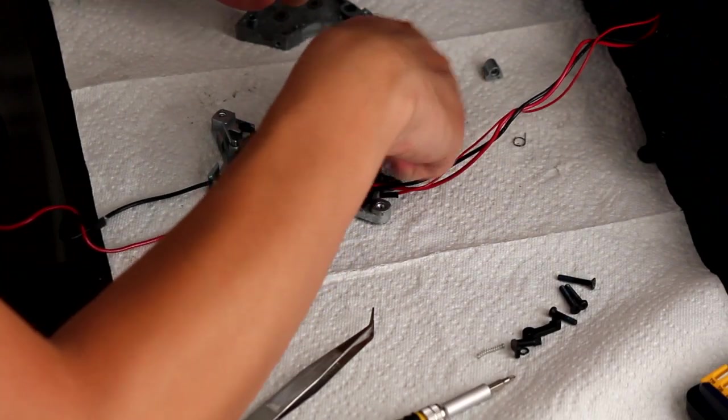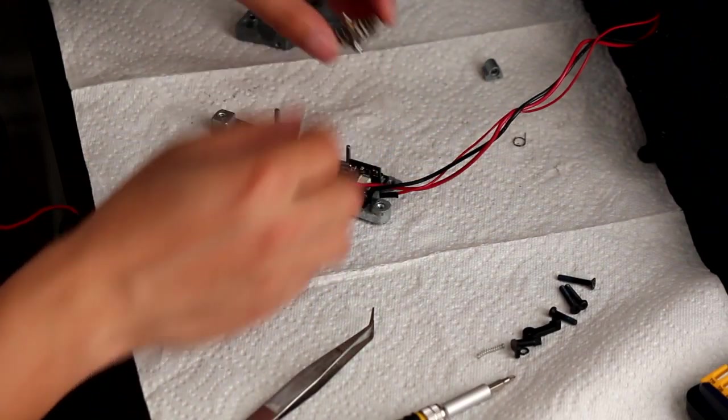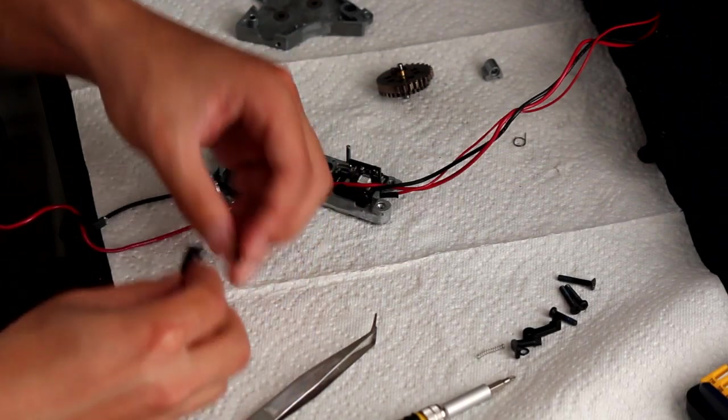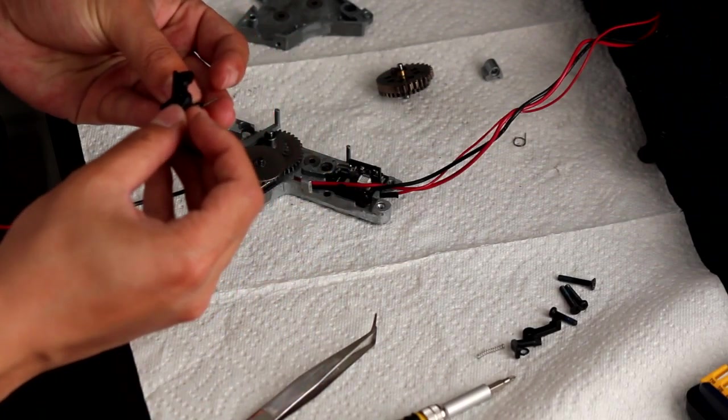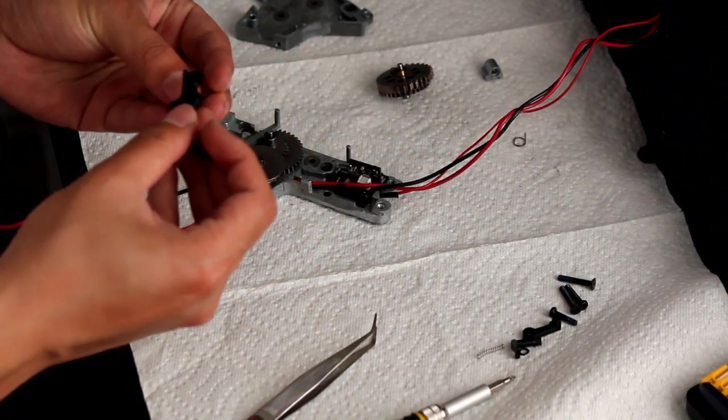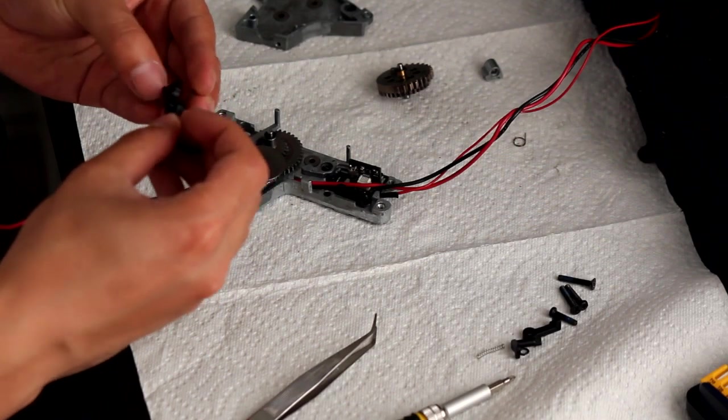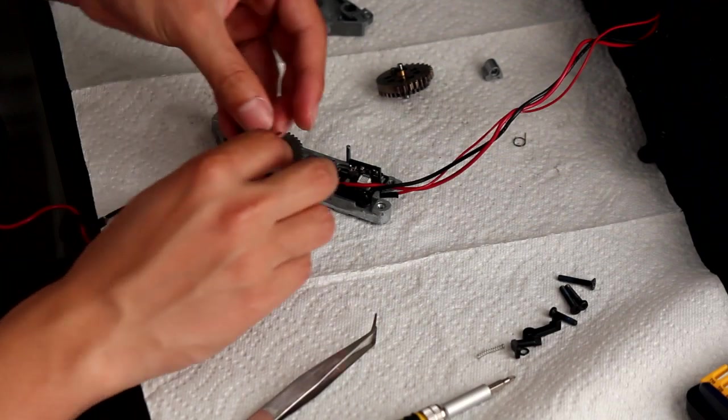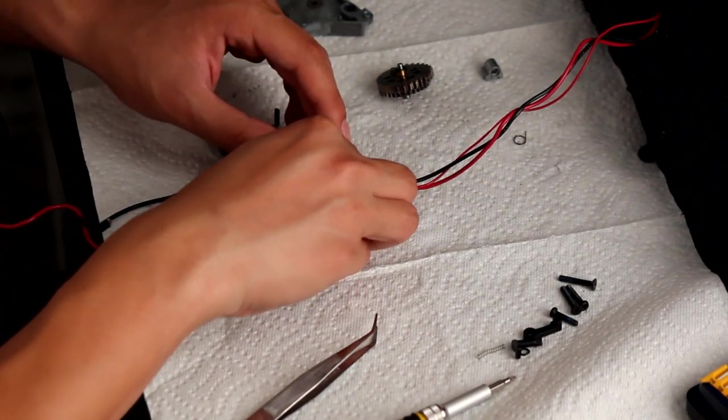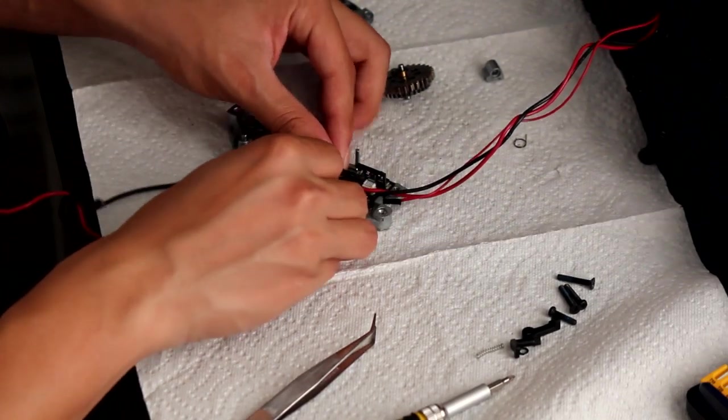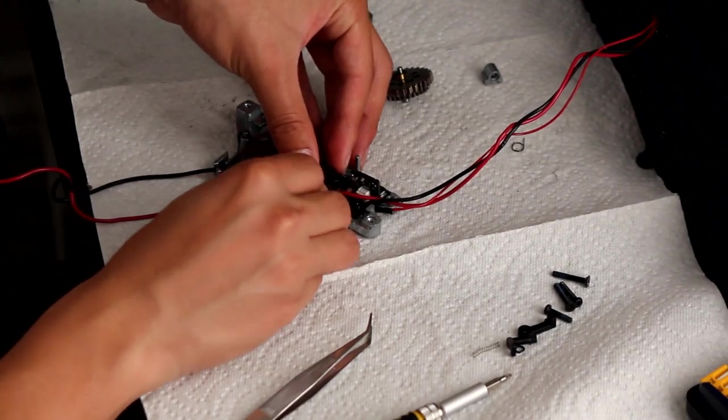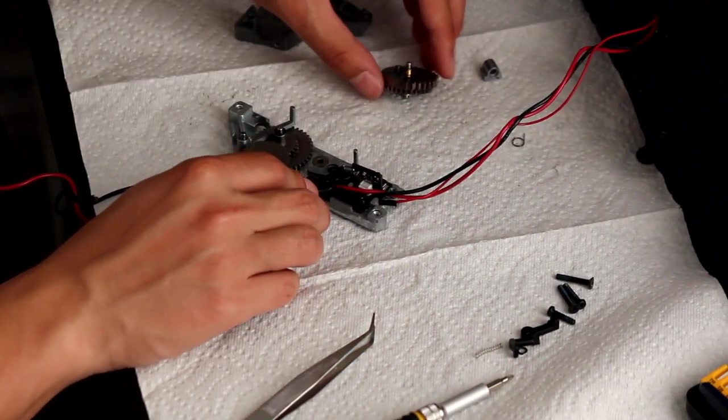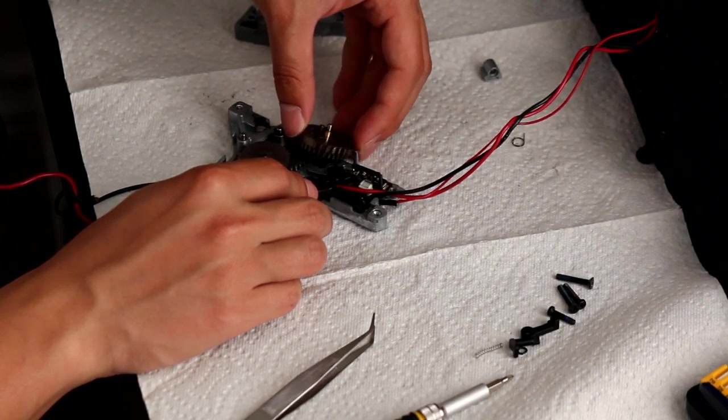Make sure your shim doesn't come out. Put in the trigger. Make sure the spring and the trigger sit in place. You'll probably have to hold it in and put that gear back in.